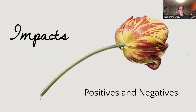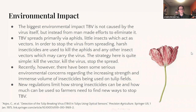Now for the impacts, starting with environmental impacts. It's actually very interesting that the biggest impact itself is not the disease decimating fields of tulips, but actually trying to combat the disease. Primarily it spreads through aphids and other insects acting as vectors. We use some pretty tough insecticides trying to kill all of these bugs, and that's actually caused some huge environmental concerns. New regulations are limiting how strong the insecticides can be and how much farmers can use, so they're trying to find new ways to fight the virus.